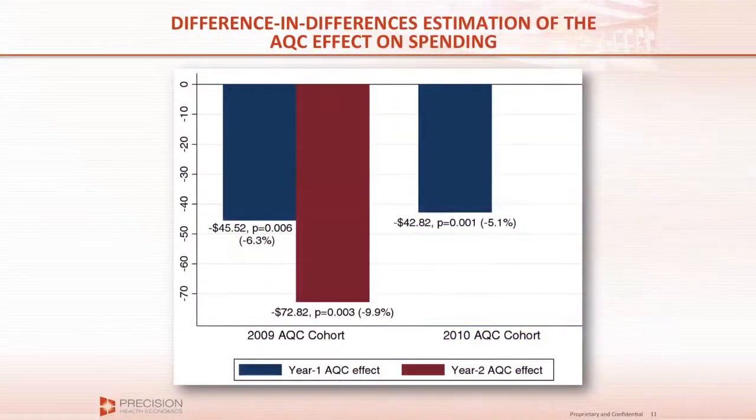So those are the three pillars of the Alternative Quality Contract. Here's what we find: if you look at providers who joined the AQC in year one — that's 2009 — spending in the first year fell by about 6%, and spending in the second year fell by about 10%. You get identical numbers if you look at providers who joined in 2010. So the takeaway number is about 10% savings in two years.